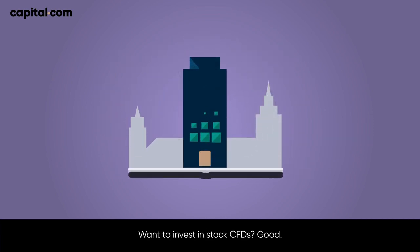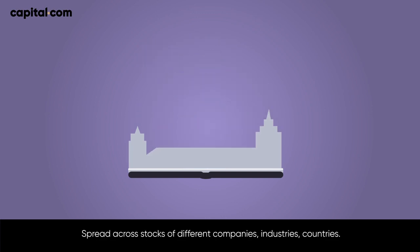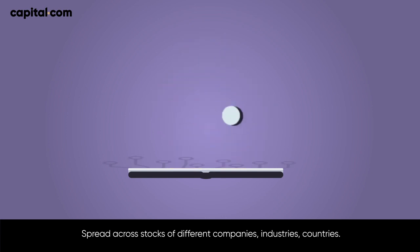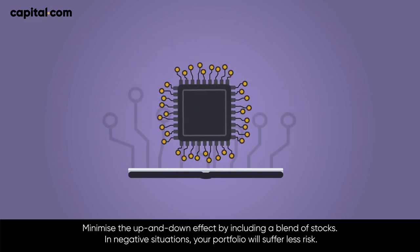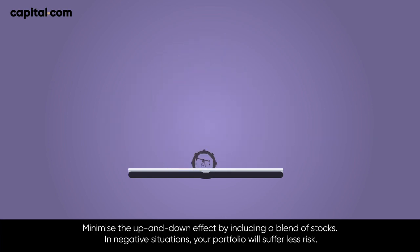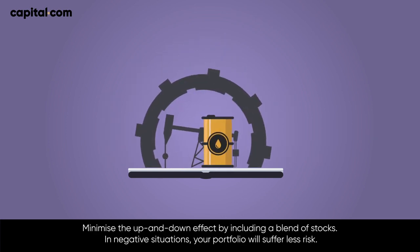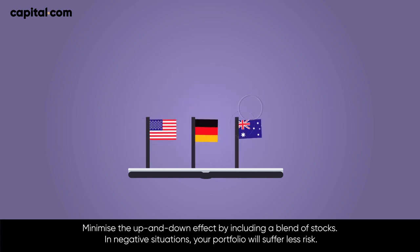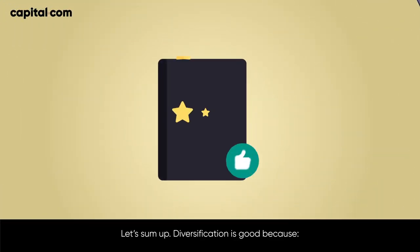Want to invest in stock CFDs? Good. Spread across stocks of different companies, industries, and countries. Minimize the up and down effect by including a blend of stocks. In negative situations, your portfolio will suffer less risk.